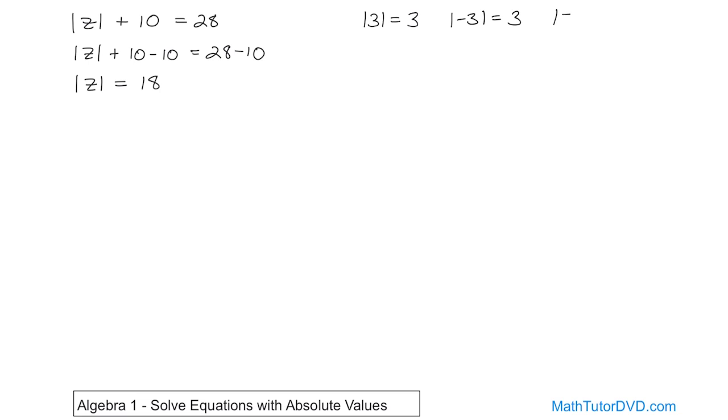The absolute value of negative 17 is 17. The absolute value of 24 is 24. What do you do when you see this absolute value sign? Basically what you do is you take away the sign, throw it away in the trash can.